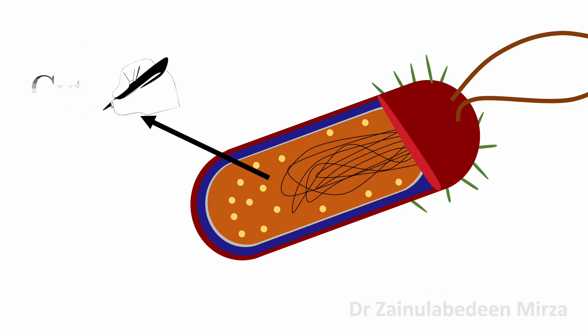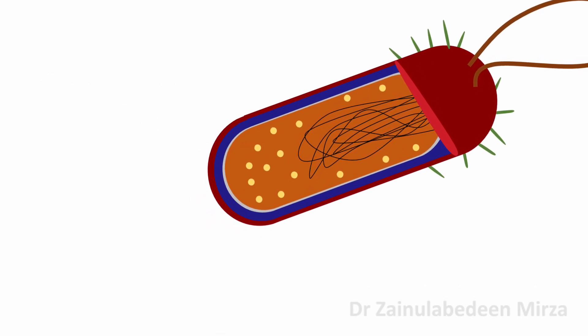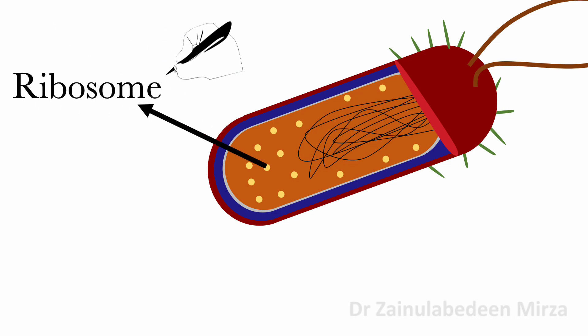Inside the cells, cytoplasm consists of cellular structures and cytosol. Cytoplasm contains salts, enzymes, cell components, and other organic molecules. Ribosomes in the cells are responsible for protein production.